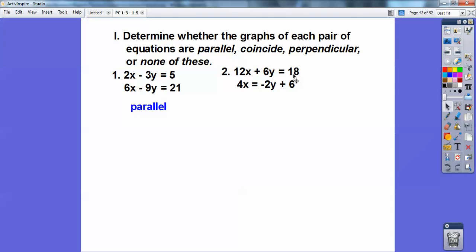Since this is a multiple of this one right here—actually the top one is times 3 of the bottom one—then these guys coincide with each other. See the difference? These guys, the multiple is not the same with the 5 and 21, but it is all the way through with the 18 and 6. So they're coinciding. It's the same exact line.